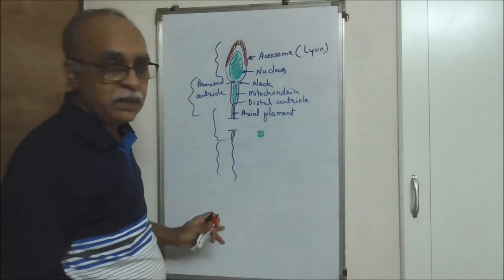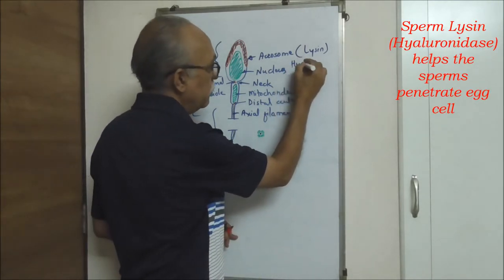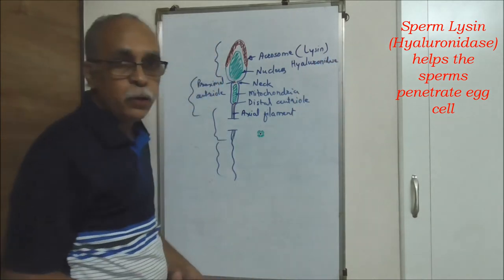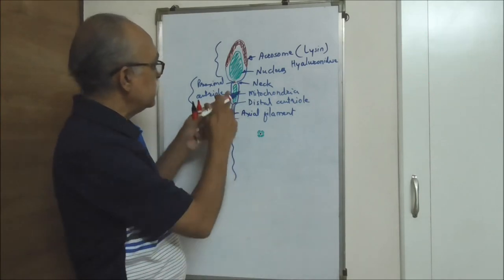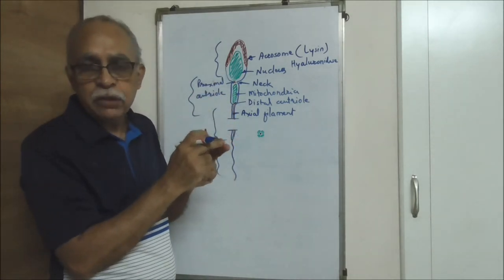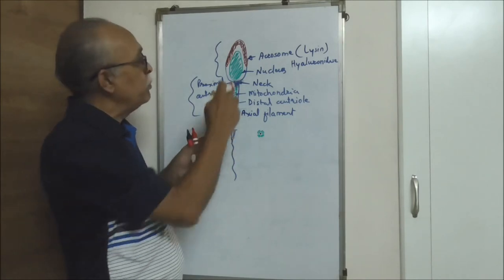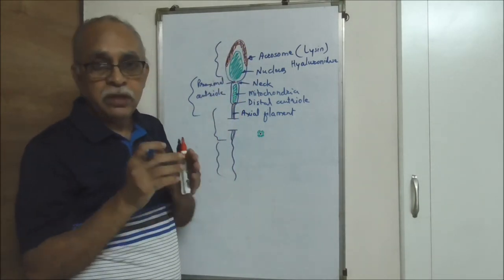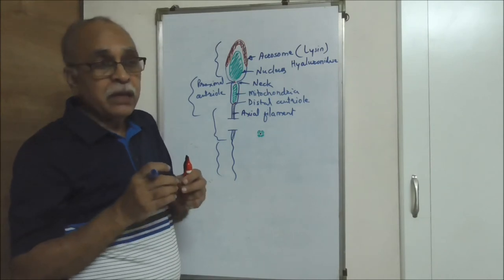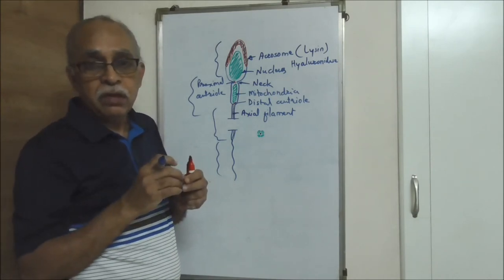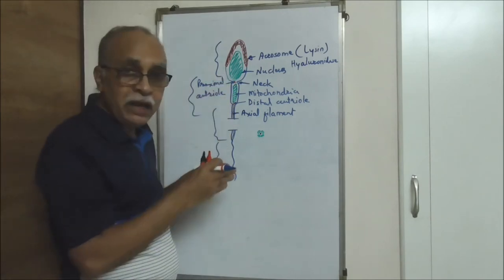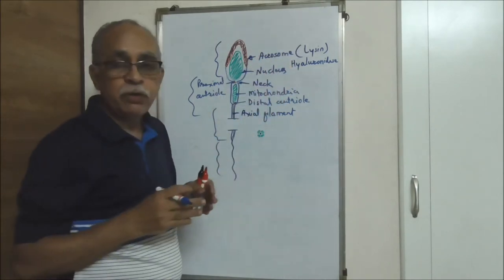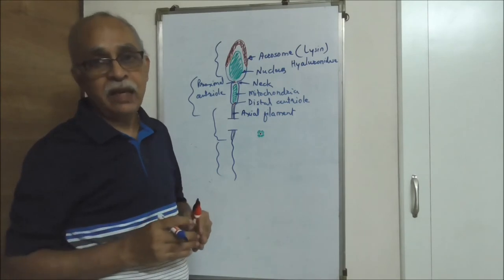The acrosome contains sperm lysine, also called hyaluronidase. Its function is: when the sperm approaches the egg cell or the oocyte, the enzyme contained in the acrosome helps make a small dent in the covering of the egg cell so that the sperm can enter into it and participate in fertilization. So the acrosome helps the sperm in entering the egg cell.